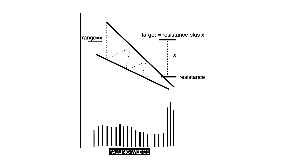A falling wedge is a bullish reversal pattern made up of an upper and lower trend line that converge. The upper trend line is the resistance. Once broken, the target is a breakout point plus the range of the falling wedge X. The breakout must be accompanied by volume expansion.